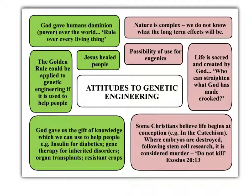This suggests that there are definite benefits to genetic engineering. However, people strongly disagree about its use. On the one hand, God gave humans dominion — meaning power over the world — in the story of Genesis, where he says to Adam and Eve, 'rule over every living thing.' It could also be argued that Jesus healed people, which suggests that doctors should be allowed to do the same. The golden rule and the concept of agape love can also be applied: if genetic engineering is used to help people, it could be argued that it's the most loving thing, or that you would like it yourself and therefore should treat others as you wish to be treated.